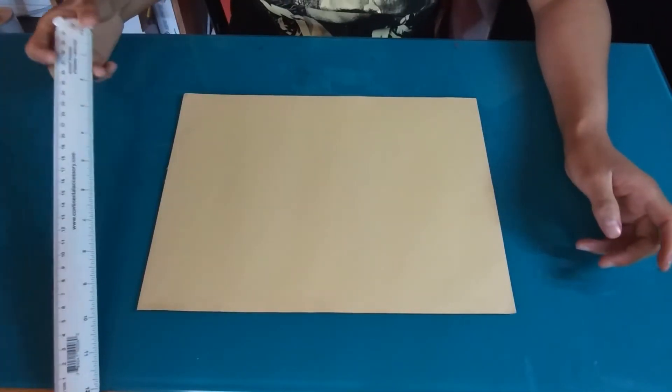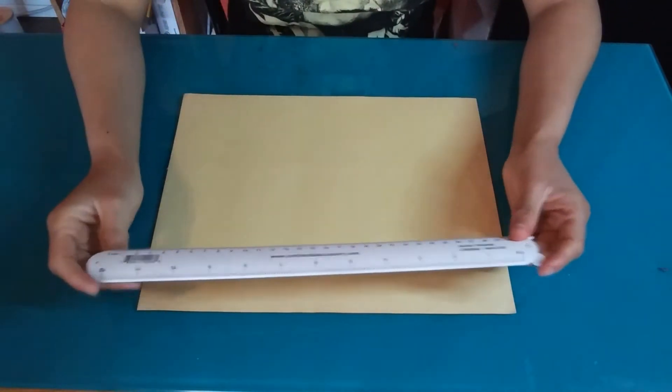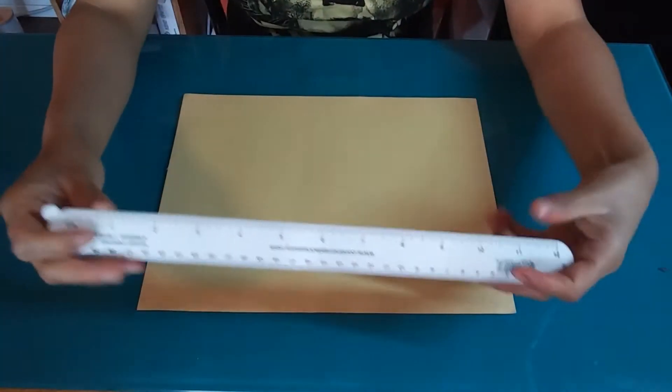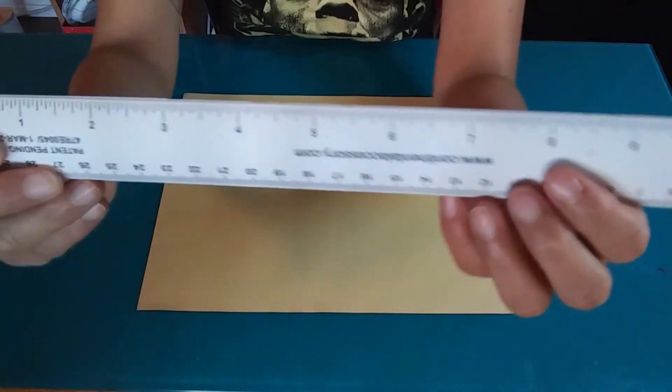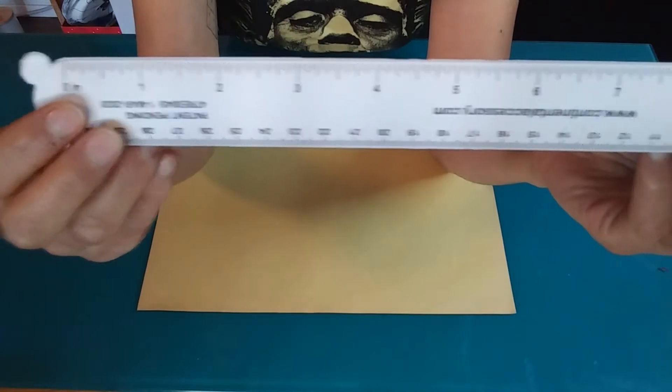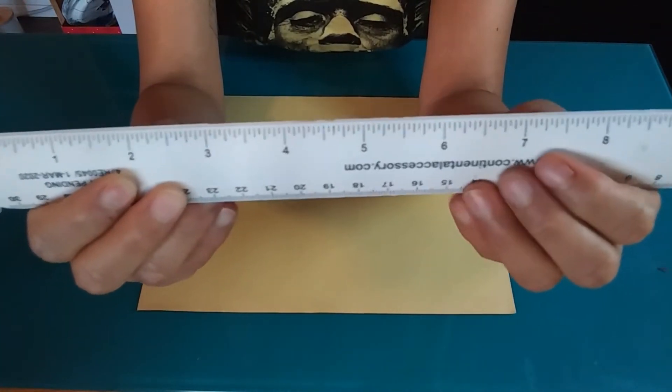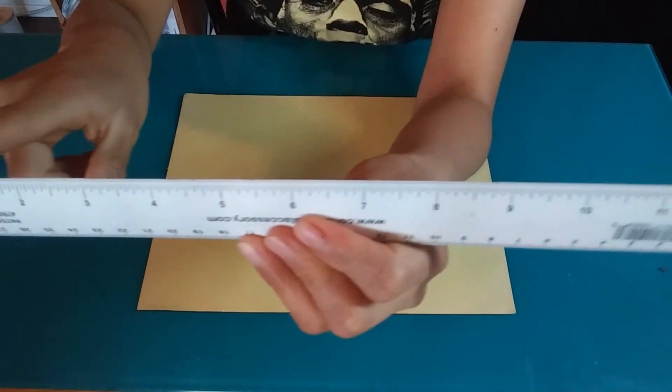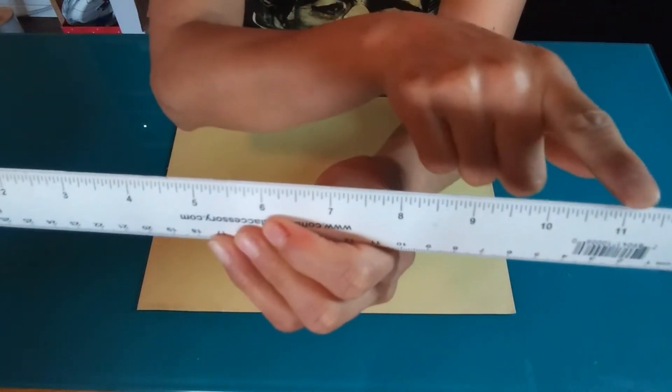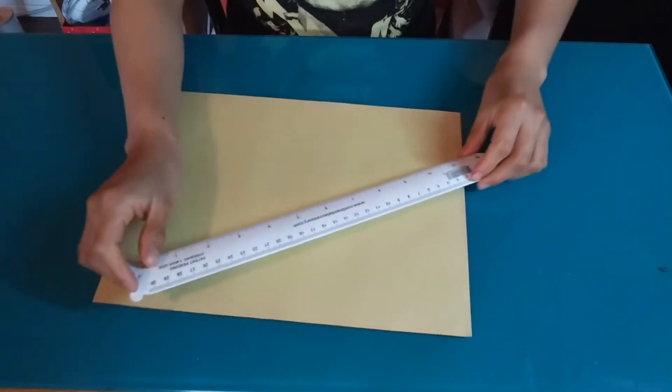To start, we are going to use our paper and our ruler. A ruler is a very useful tool because it can help you measure things. And we have actually used a ruler to measure some stuff before. But this time we're going to use the ruler because it has a very straight edge, and this straight edge can help us make very straight lines.